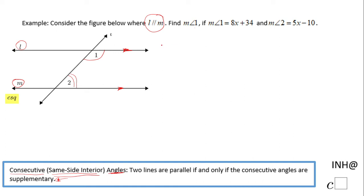These angles are supplementary, so that is the thing I am going to write here. Measure of angle 1 plus measure of angle 2 equals 180. This is the statement in geometry that can be written based on this problem. Now I am going to replace the measure of angle 1 with 8x plus 34, the measure of angle 2 with 5x minus 10.